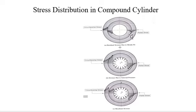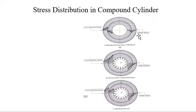If you see the stress distribution in the compound cylinder, the circumferential stress is maximum at the outer side of the inner cylinder and becomes zero at the outer side. These are the residual stresses due to the shrink fit. As mentioned, while heating this cylinder and fitting it onto the inner cylinder, the residual stresses due to shrink fit are induced. The magnitude of radial stress becomes zero at the inner surface and has some magnitude at the outer surface of the inner cylinder.